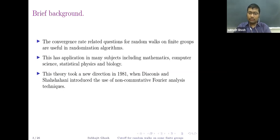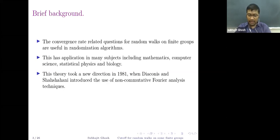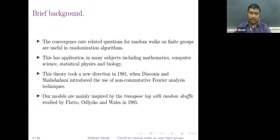In particular, Diaconis and Shahshahani studied the random transposition model on the symmetric group and proved that the mixing time for this shuffle on S_n is (1/2) n log n. The shuffle is as follows: from a deck of n cards, select any two cards randomly and transpose (interchange) them. The models I am going to introduce are mainly inspired by the top-with-random shuffle on the symmetric group S_n, first studied by Flatto in 1985.